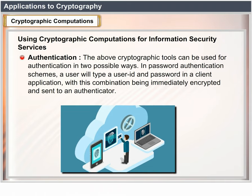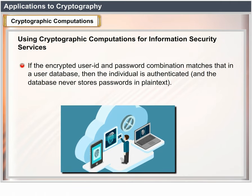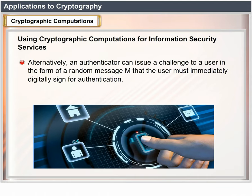Authentication: the above cryptographic tools can be used for authentication in two possible ways. In password authentication schemes, a user will type a user ID and password in a client application, with this combination being immediately encrypted and sent to an authenticator. If the encrypted user ID and password combination matches that in a user database, then the individual is authenticated, and the database never stores passwords in plain text.